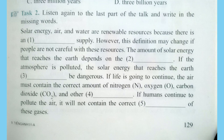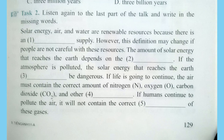Solar energy, air, and water are renewable resources because there is an unlimited supply. However, this definition may change if people are not careful with these resources. The amount of solar energy that reaches the Earth depends on the atmosphere. If the atmosphere is polluted, the solar energy that reaches the Earth may be dangerous. If life is going to continue, the air must contain the correct amount of nitrogen, oxygen, carbon dioxide, and other gases. If humans continue to pollute the air, it will not contain the correct amounts of these gases.